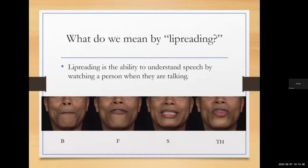Lip reading is the ability to understand speech by watching a person when they are talking. I'm going to show you some examples of speech information available on the talker's face. Some people believe that not much information is available from the face, but when talking about lip reading, we often focus on the shape of the lips. Clearly the shape of the lips is important for identification of consonants and vowels. In this slide, we show still frames capturing the talker's face at informative points when speaking four different English consonant sounds: B, F, S, and TH.